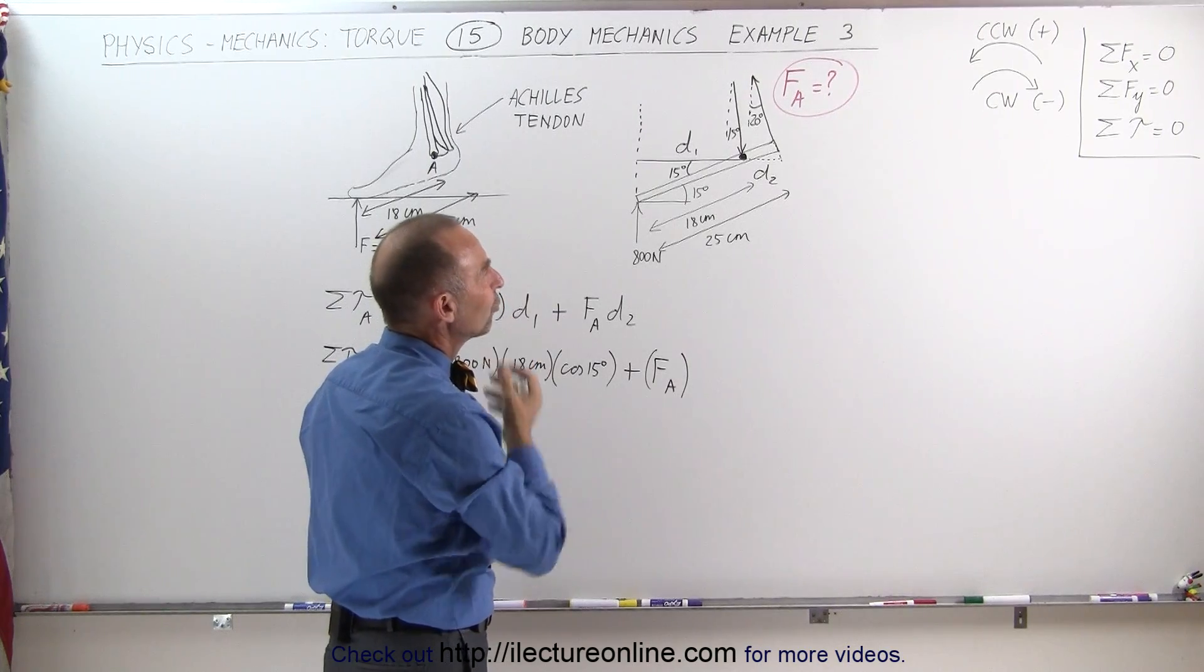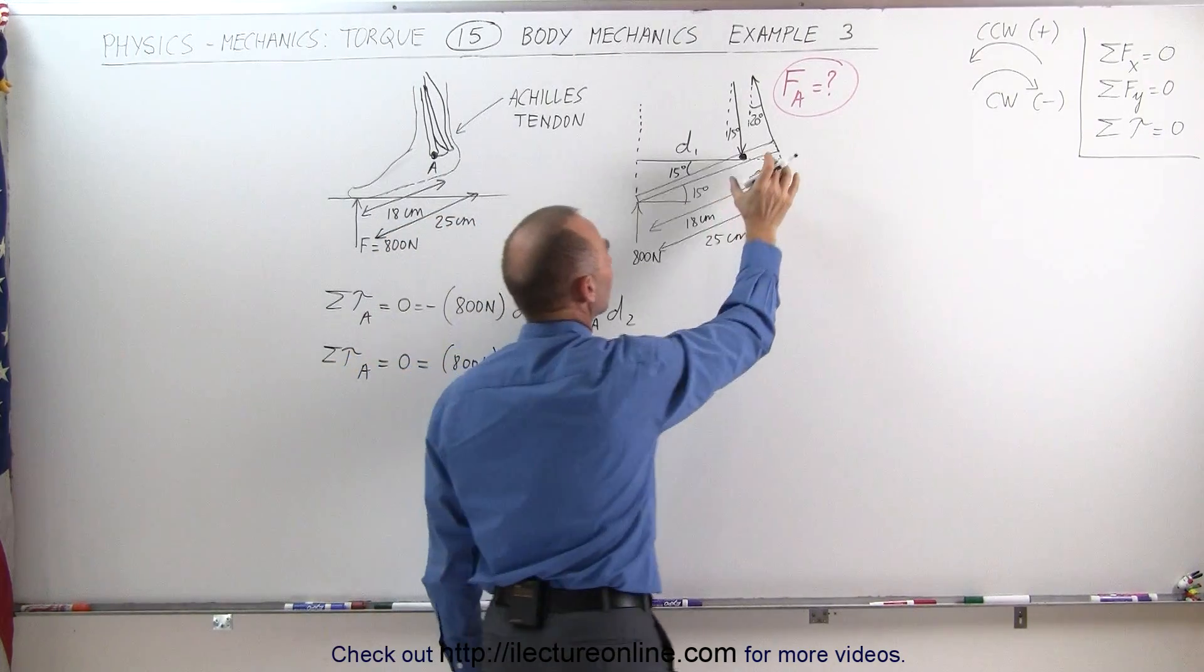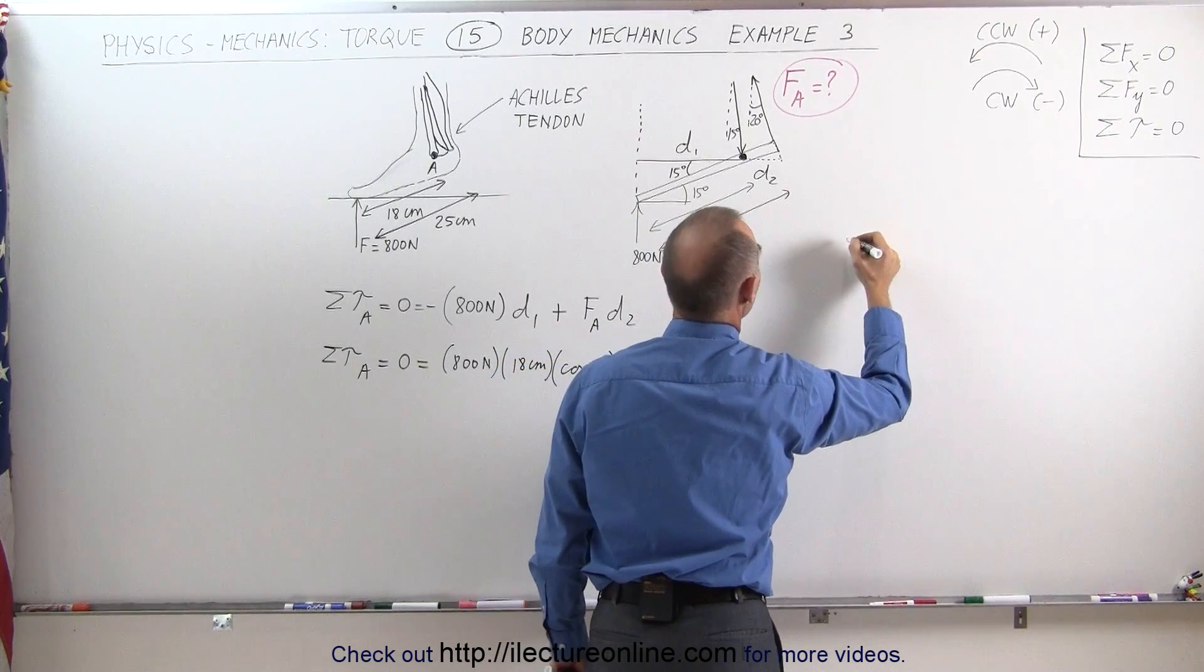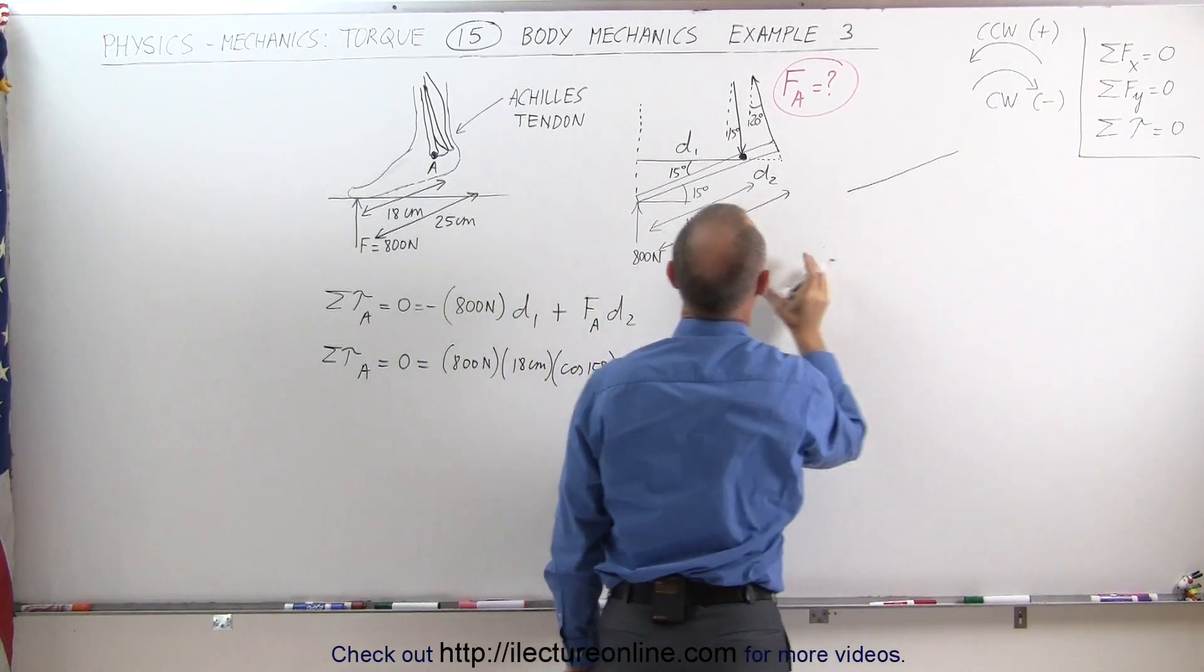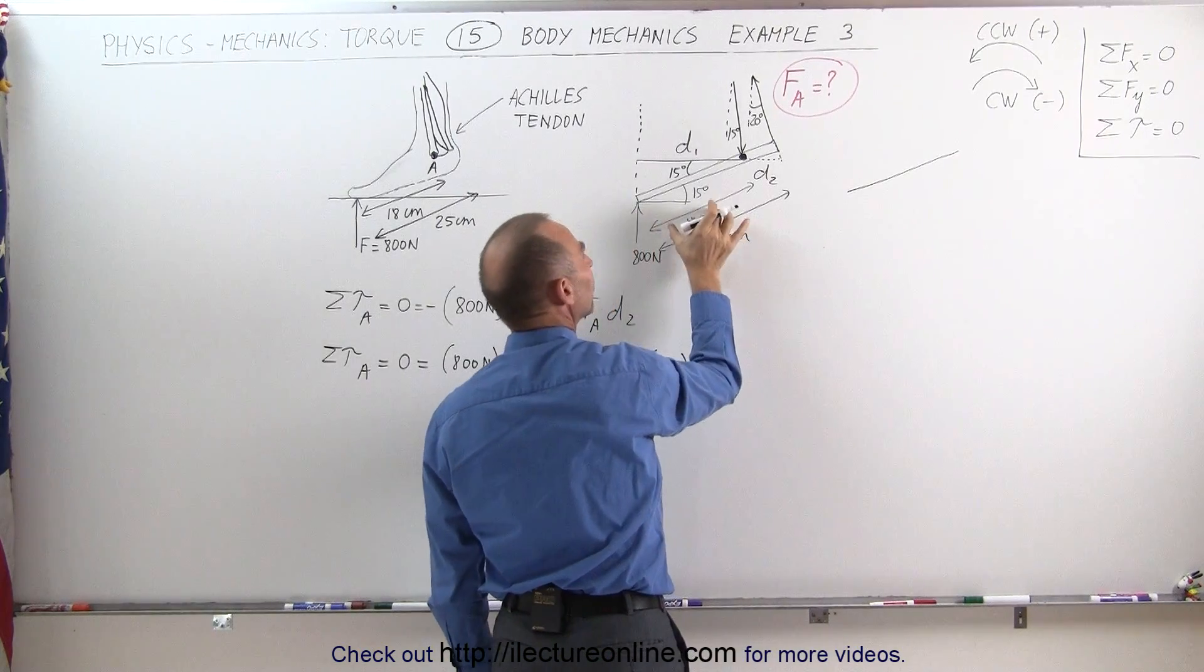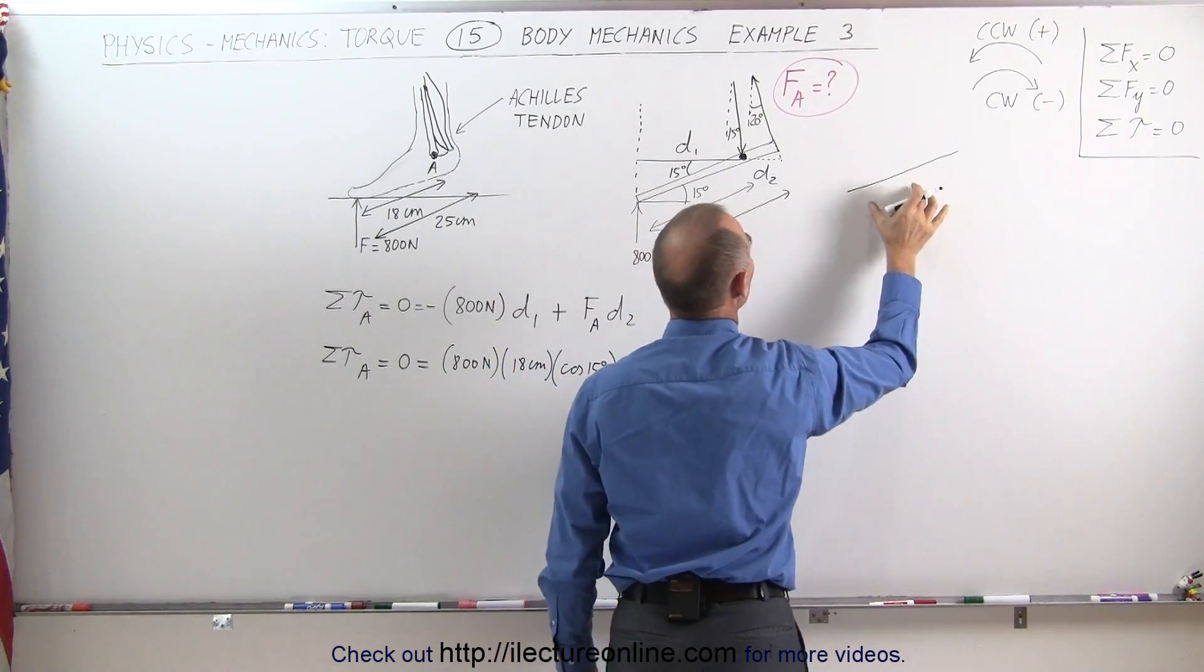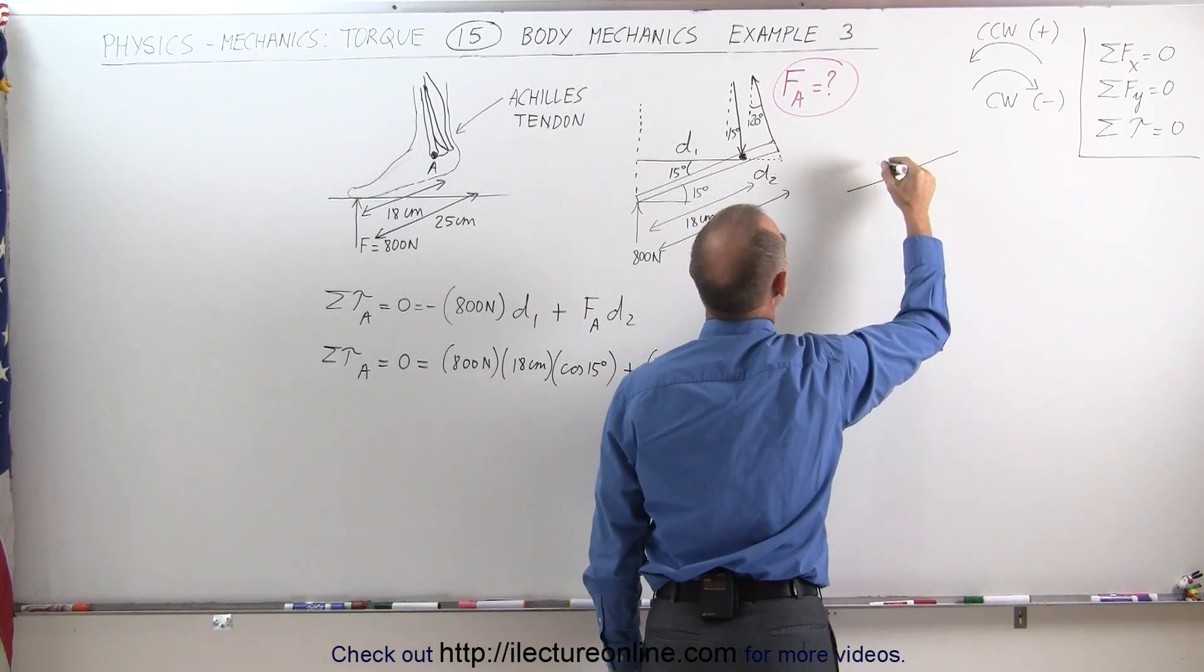Now to find distance two we need to redraw this. We have this distance here from there to there and we know that's going to be 25 centimeters minus 18 centimeters which is 7 centimeters so from there to there is 7 centimeters.